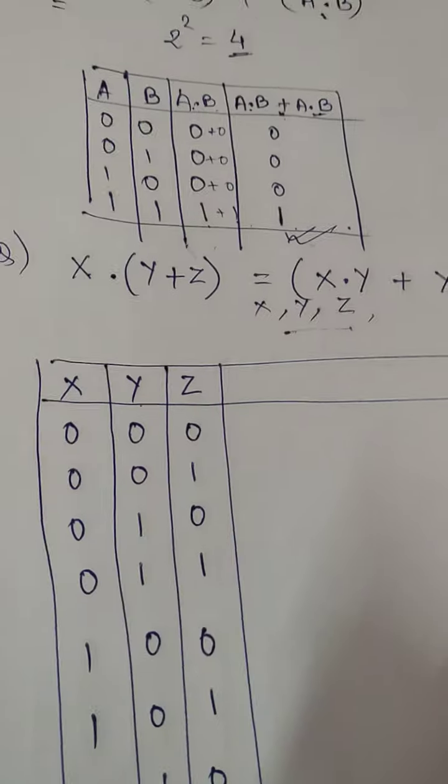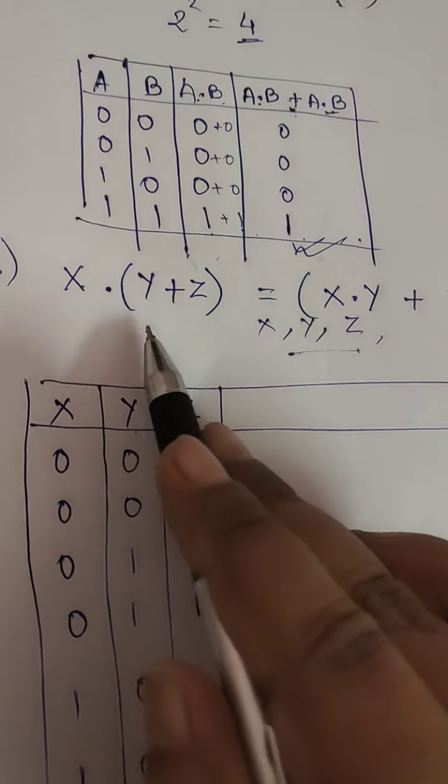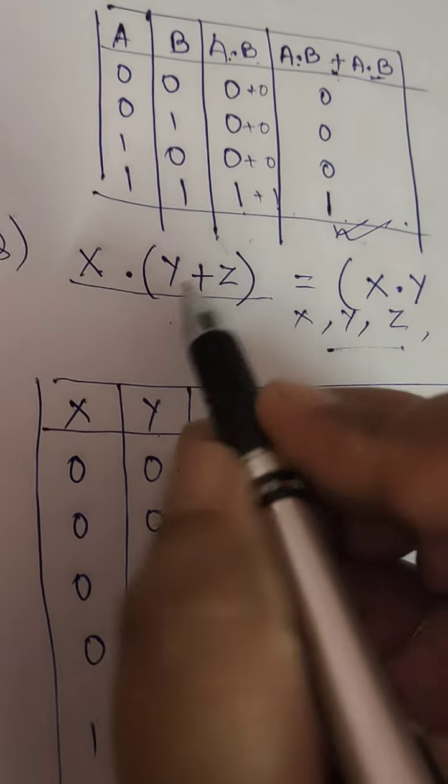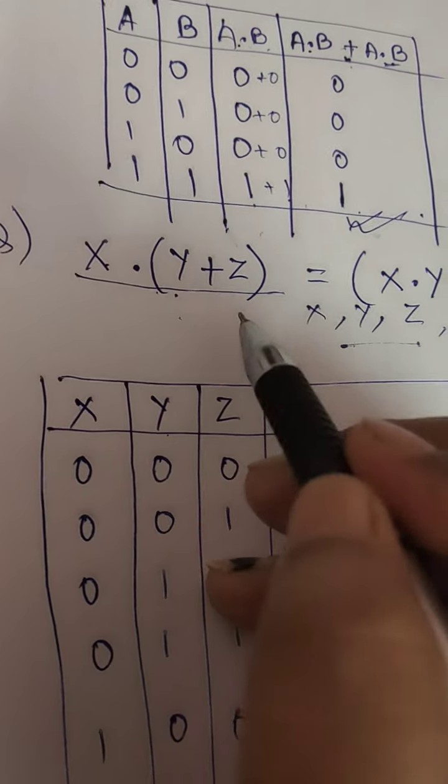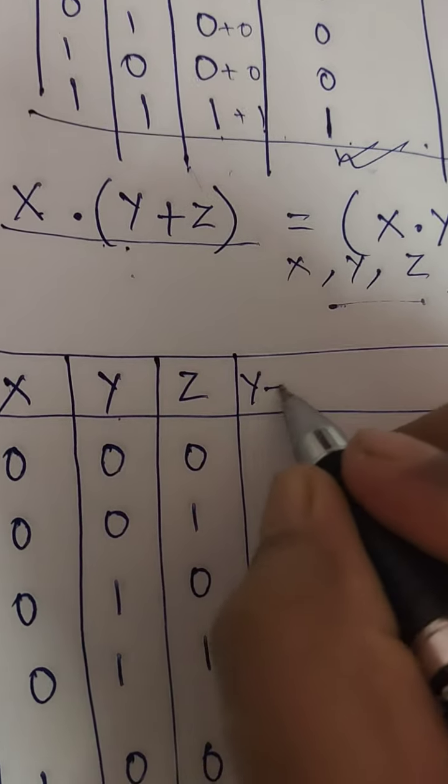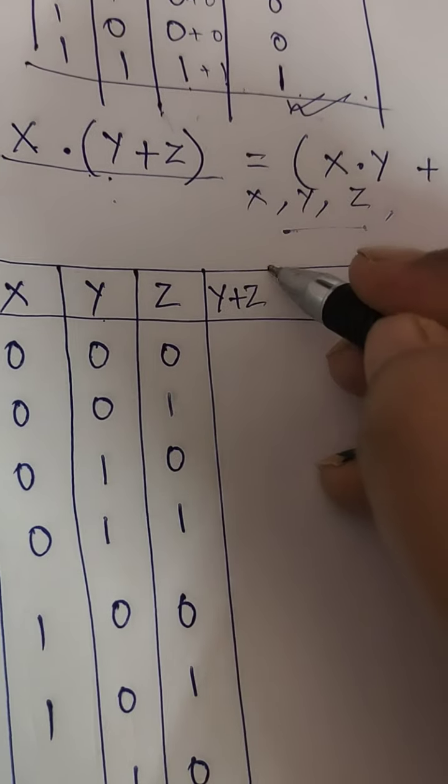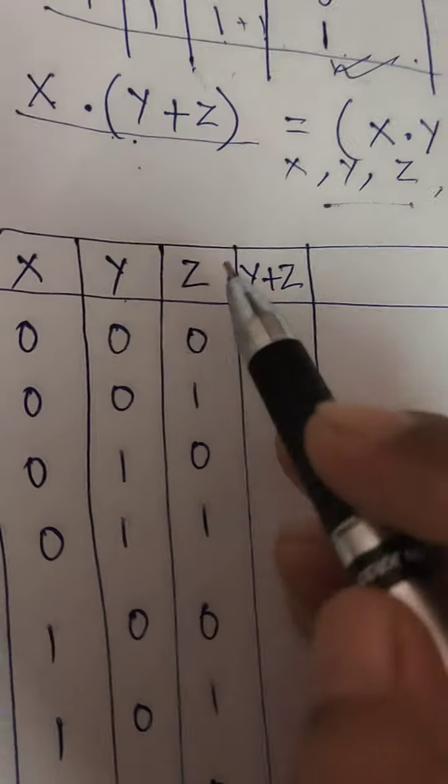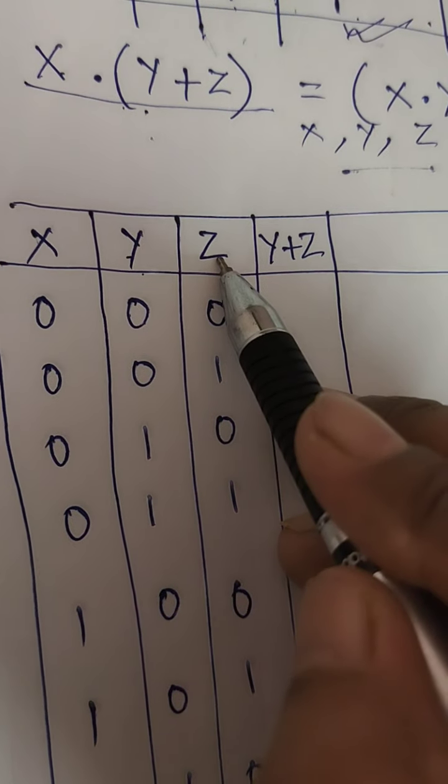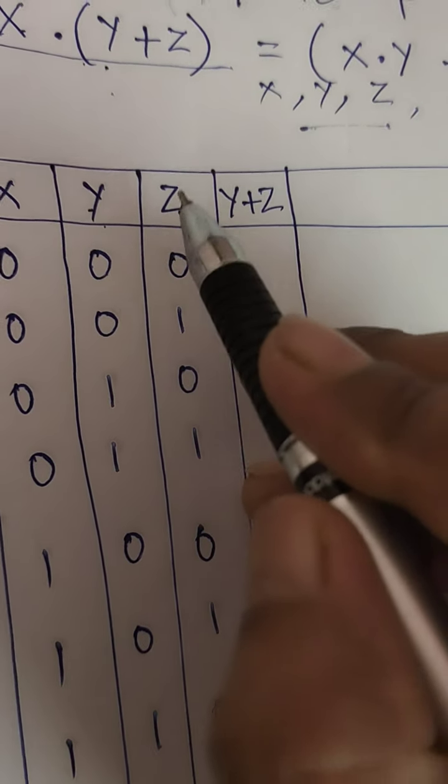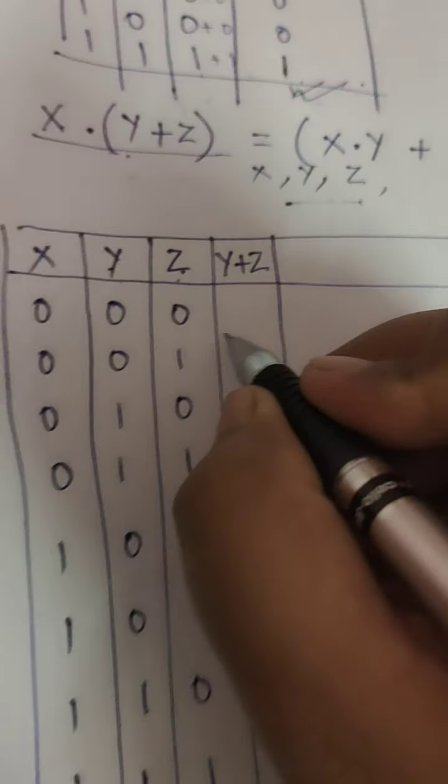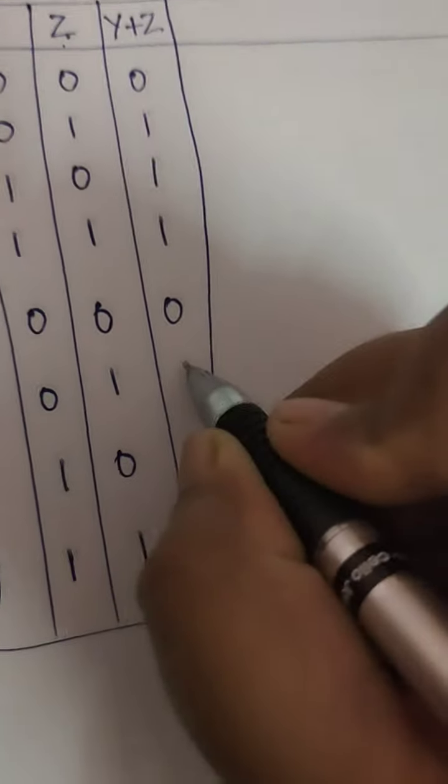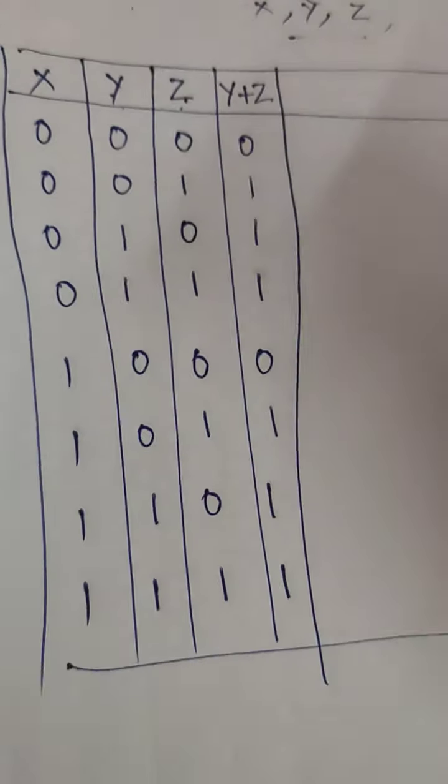This is how the truth table input is made when there are 3 variables. You'll make it this same way. Okay, now let's solve this one. First we'll write the answer for this expression. In this, first is the bracket, so solve that first. So y plus z. Now look, y plus z means add these two. In plus, as I said, if even one is one, the answer is one. So this is zero, this is one, one, one, this is zero, this is one, one, one, one is done.